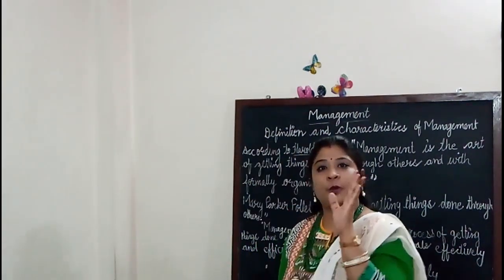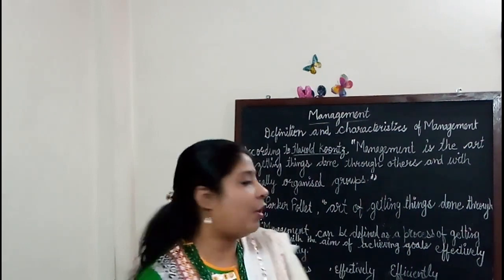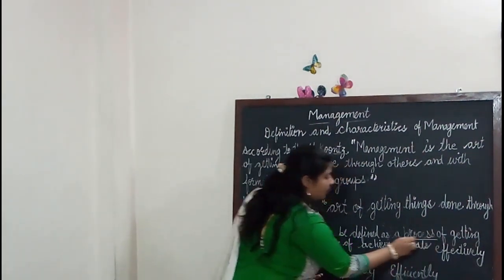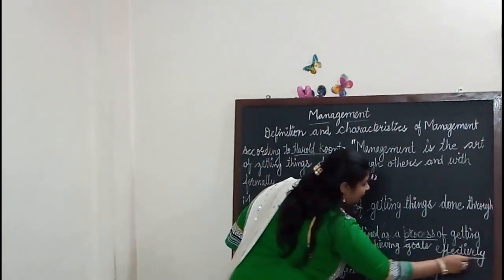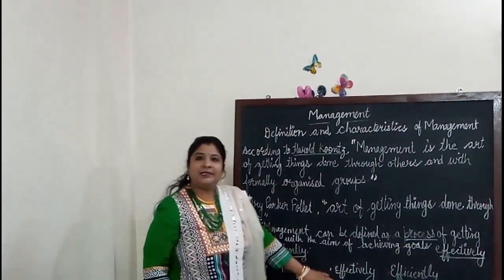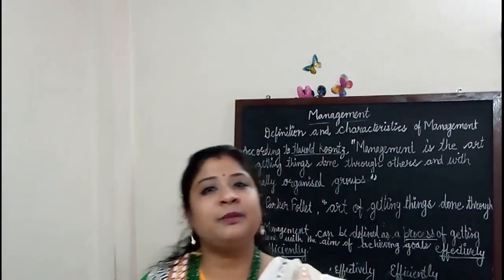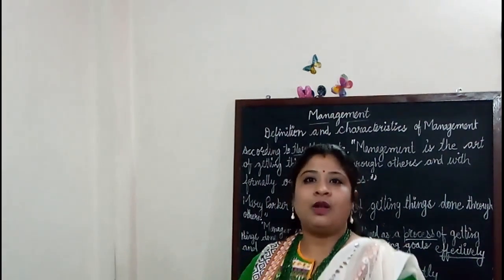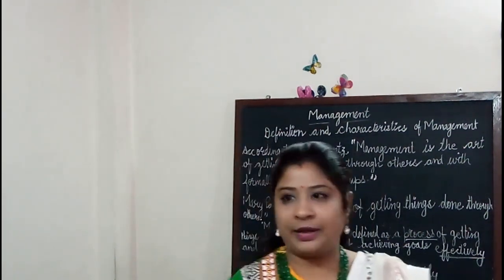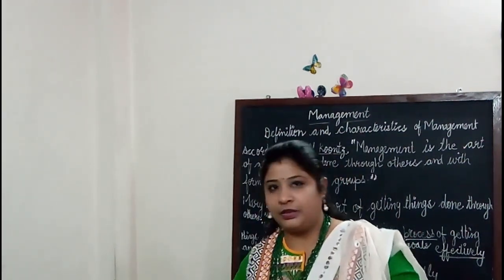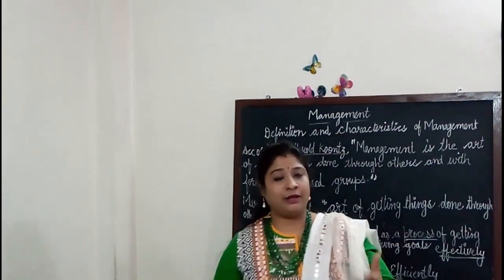Management can be defined as the process of getting things done with the aim of achieving goals effectively and efficiently. The important terms in this definition are: process, effectively, and efficiently. The term 'process' refers to the primary functions or activities that management performs to get things done. These functions are Planning, Organizing, Staffing, Directing, and Controlling. It is a process — a group of activities, step by step, one after another.